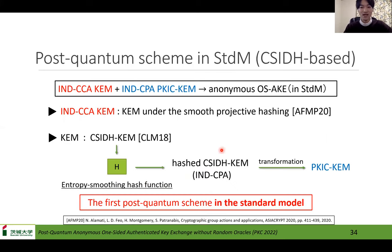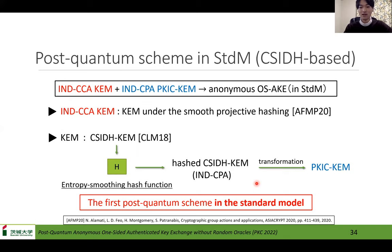We use the first and second computation in ENC as WANC-C and the third computation as WANC-K, and then we can use it as PKH-CAM by transforming it as follows. The last instantiation is the first post-quantum scheme in the standard model, but only CSIDH-based. The scheme consists of the CCA-CAM and the smooth projective hashing from AFMP-20, and the CSIDH-based scheme from CRM-18. We pass the session key of the scheme through an entropy smoothing hash function and construct it as hashed CSIDH-scheme. This scheme is also converted to the PKH-CAM in the same way. So this scheme is the first post-quantum scheme in the standard model.